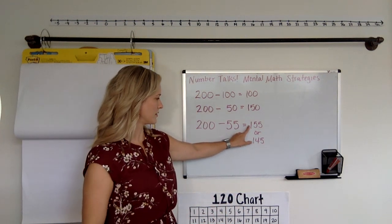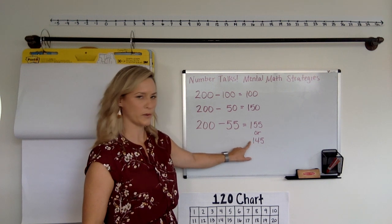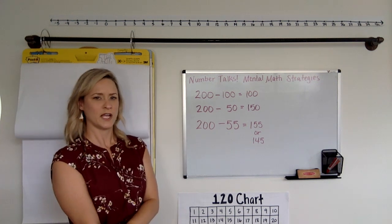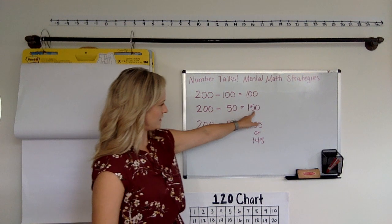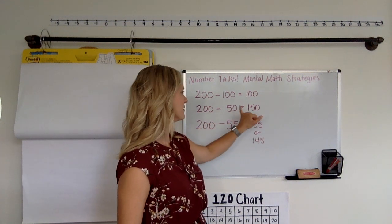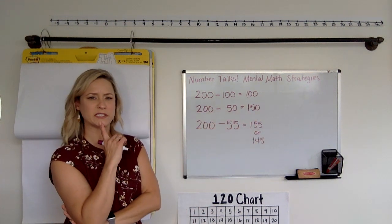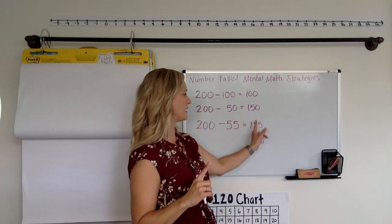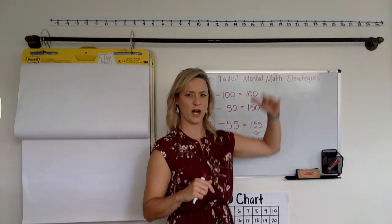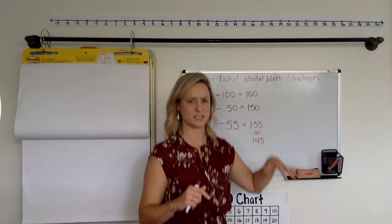I bet some of you said 155 and some of you, I bet, said 145. And I bet that's because of this 150 up here. So I think you knew there would be a difference of five between the answers. But did you go up five or did you go down five?